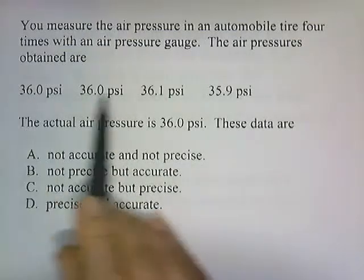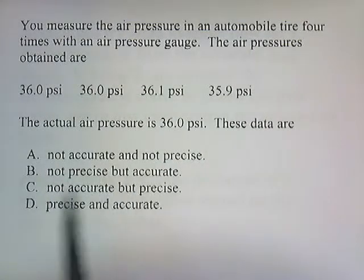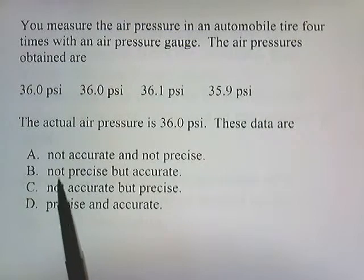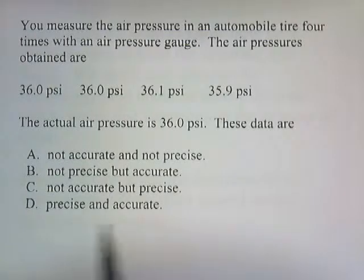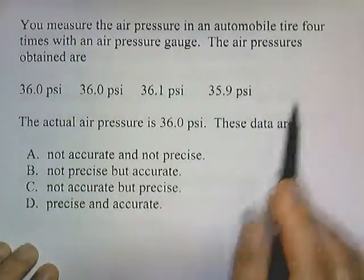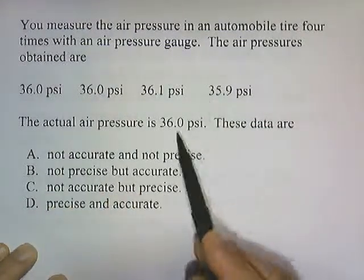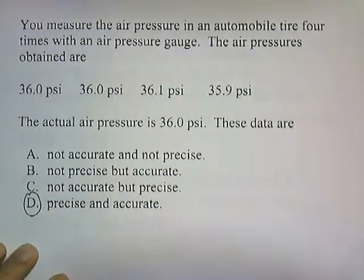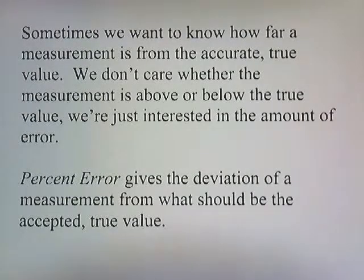What can we say about these data? Our choices are that the data is not accurate and not precise, not precise but accurate, not accurate but precise, and precise and accurate. So how would we characterize this data? Well, all the numbers seem close together so they seem precise. And since these numbers are close to the actual value, it's accurate. So our answer is it's precise and accurate.